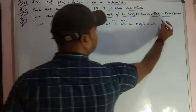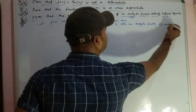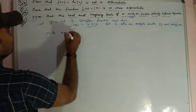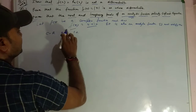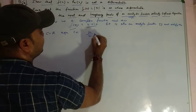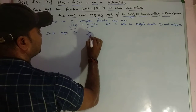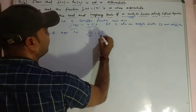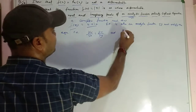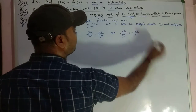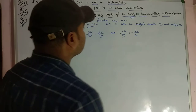So it must satisfy the Cauchy-Riemann equation. Cauchy-Riemann equation क्या था: del u by del x equal to del v by del y, and del u by del y equal to minus del v by del x। यह था हमारा Cauchy-Riemann equation।